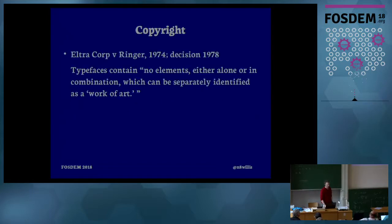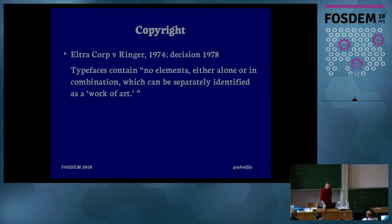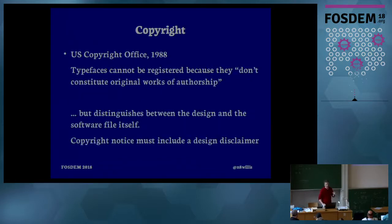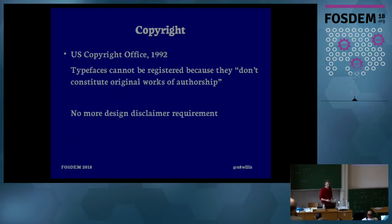We can look at the cases that got us here. In 1974, Eltra tried to copyright a typeface and the Copyright Office said no element, either alone or in combination, can be separately identified as a work of art. In 1976, the Copyright Act was revisited in the House, and the committee said there's nothing here that fits into the meaning of the copyright bill. In 1988, things changed — this was the first time the Copyright Office distinguished between the design and software files, as the whole software industry was working through copyrights.